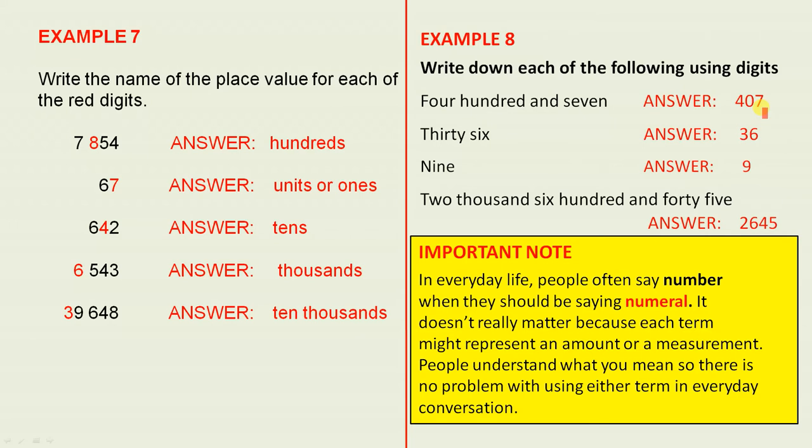Finally, write down each of the following using digits. 407. So 407. That means there's a zero in the tens column. When you have 407, there's a zero in the tens column.